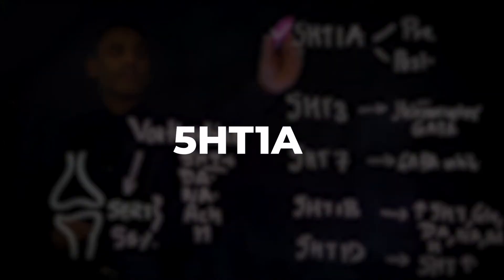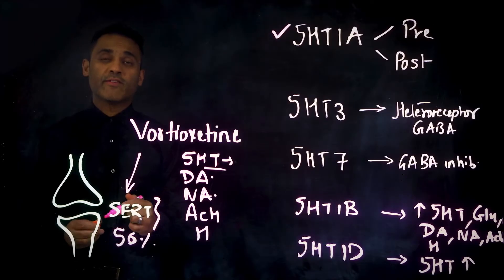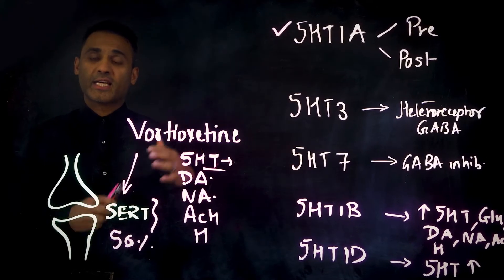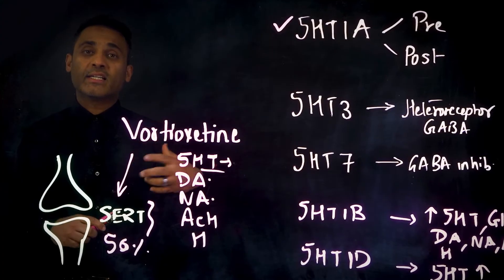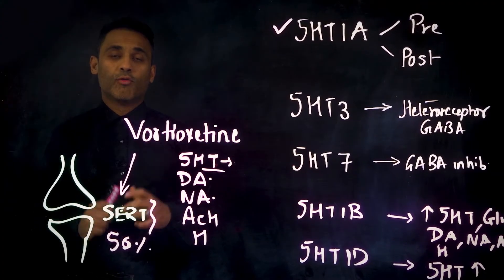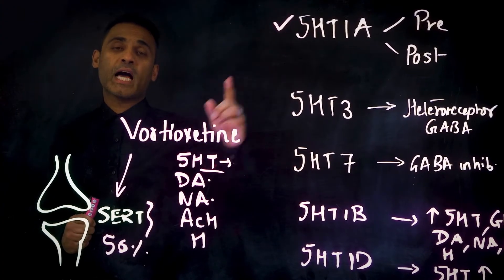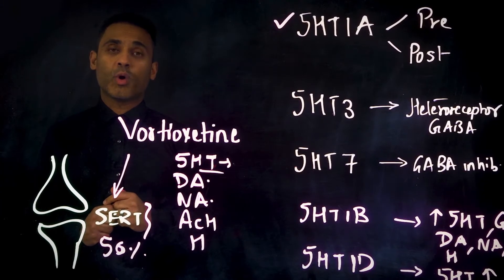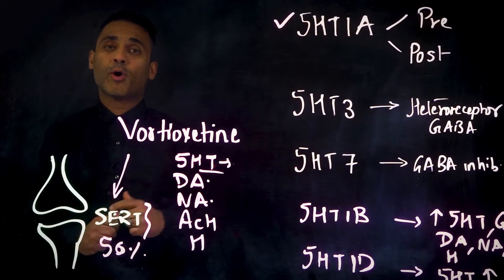So let's start with the 5-HT1A receptor. We know that the 5-HT1A receptor presynaptic acts as a brake, and that needs to be desensitized. Vortioxetine acts as a full agonist at the 5-HT1A presynaptic end and the postsynaptic end.